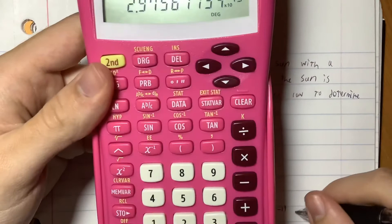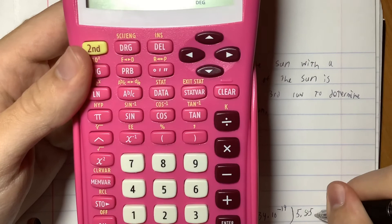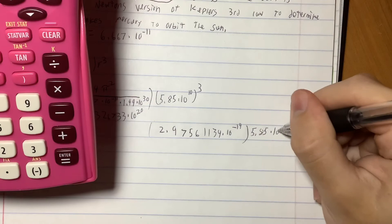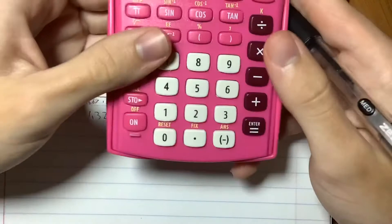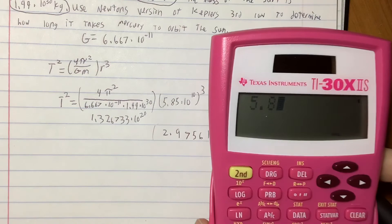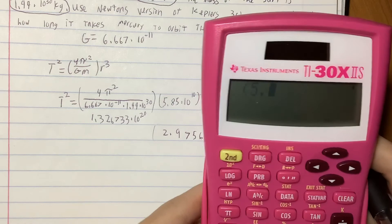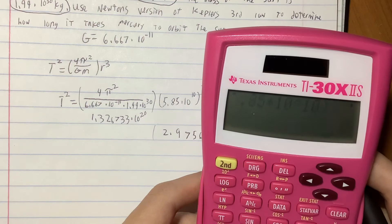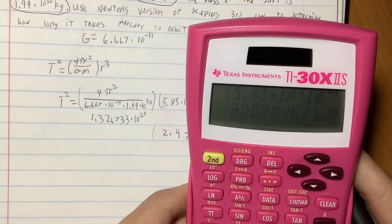And that will be times 5.85 times 10 to the 10th cubed. So next up we will find 5.85 times 10 to the 10th to the third power. Since those are multiplied, we'll multiply them together. So the radius cubed will be timed by 2.97561139 times 10 to the negative 19th.